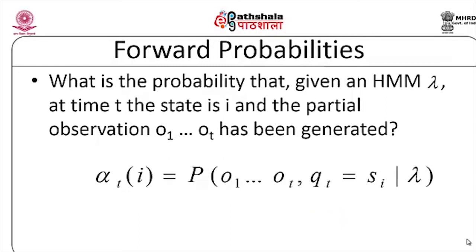The forward probability is defined as follows: given an HMM model lambda, at time t in state SI, the forward probability alpha_t(i) is the probability of generating partial observations O1 to OT and being in state SI at time T. In other words, alpha_t(i) = P(O1, O2, ..., Ot, qt = SI | lambda). It is called the forward probability because we are going forward from time 1 up to t.